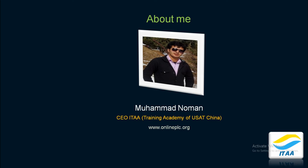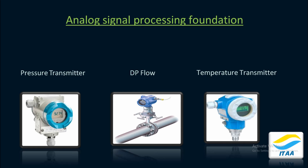Let's move on to today's topic. Today we will talk about analog signal processing foundation. That's very important when you talk about process industries like chemical, fertilizer, and oil and gas. You have to deal with analog signals — for sure — like pressure transmitters that measure pressure in the lines, flow transmitters, temperature transmitters, and density-related measurements, which are sent through your instrument to the PLC.